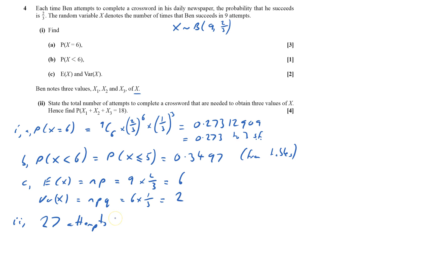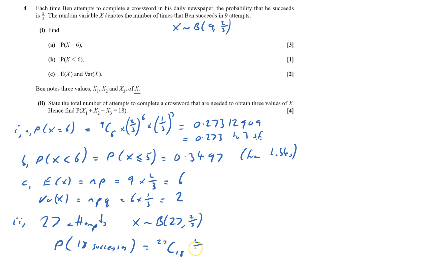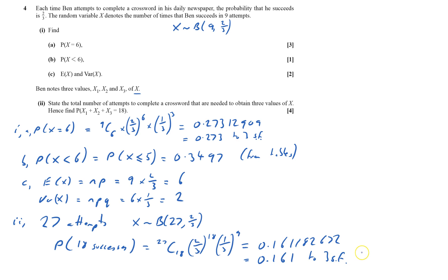I've got to work out the probability that the total score is 18 — so 18 successes. X tilde binomial 27, probability of success is still two-thirds. That will be 27C18, times two-thirds to the power of 18, and the nine others must be failures. Working that out gives 0.1611182672, which equals 0.161 to three significant figures. It's a bit of a mixture of tables and formula, and that's question four done.